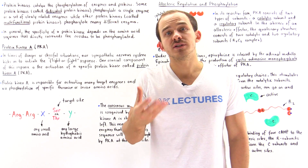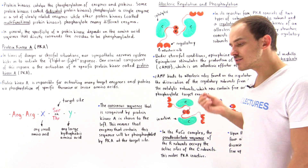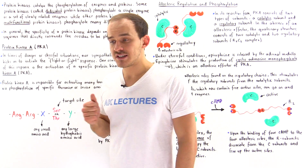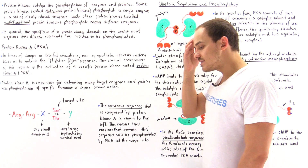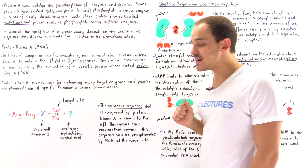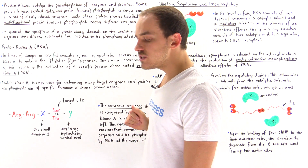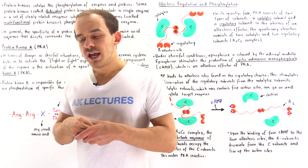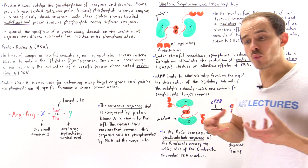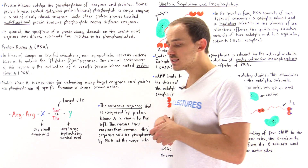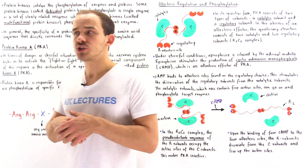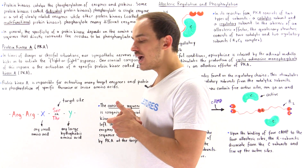To see what that means, let's discuss a specific example of a protein kinase that exists inside our body — protein kinase A, or simply PKA. What exactly is the importance and functionality of protein kinase A? When does our body actually use it?